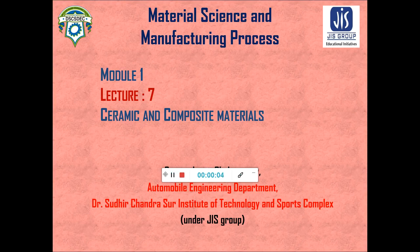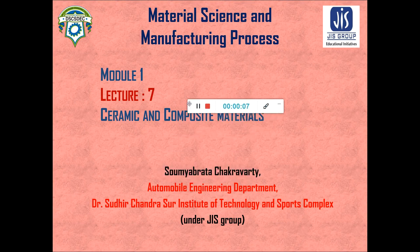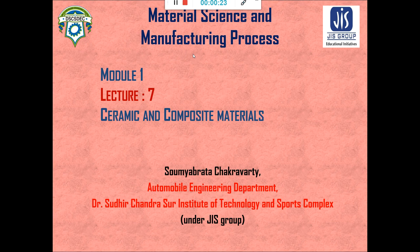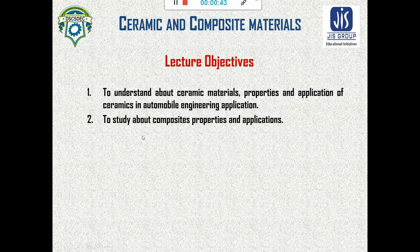Hello and welcome to the course of Material Science and Manufacturing Process. This is Module 1. So far we have studied about metals — ferrous metals and their alloys, non-ferrous metals and their alloys, and polymers. In this lecture, we will see about ceramic and composite materials. The lecture objective is to understand ceramic material properties and their application in automobile engineering.